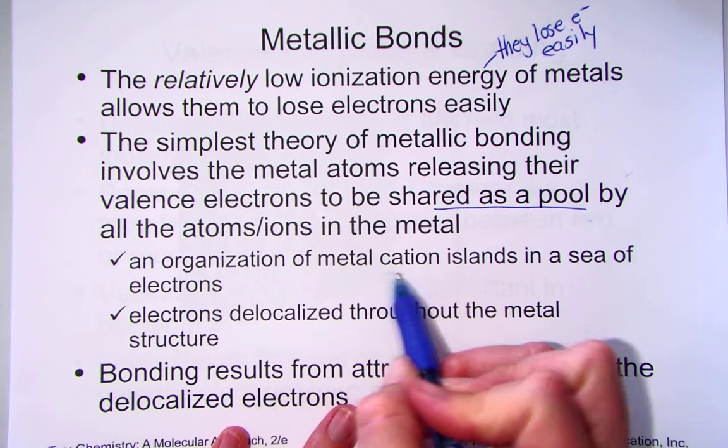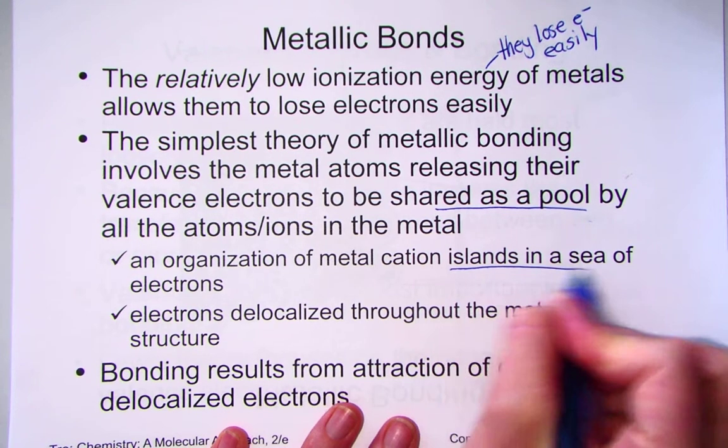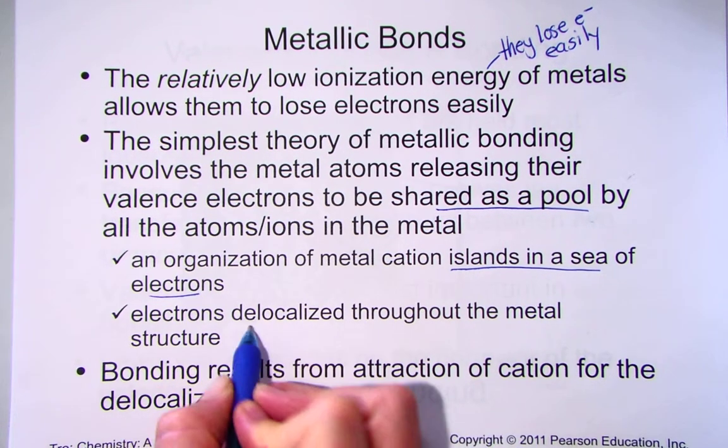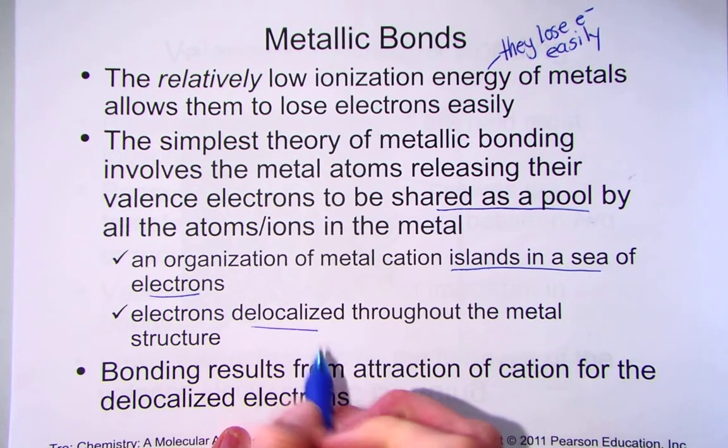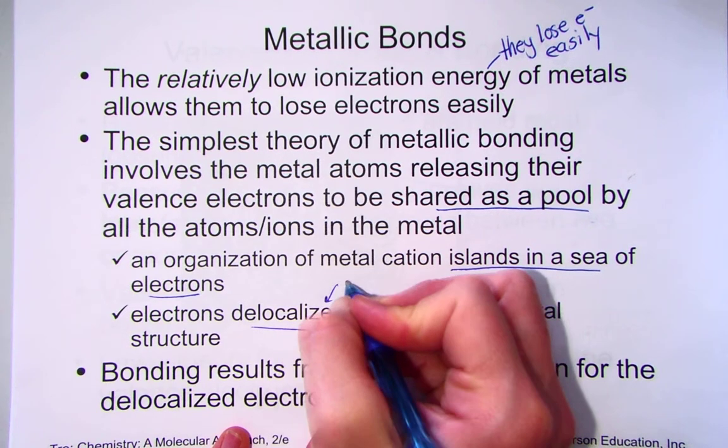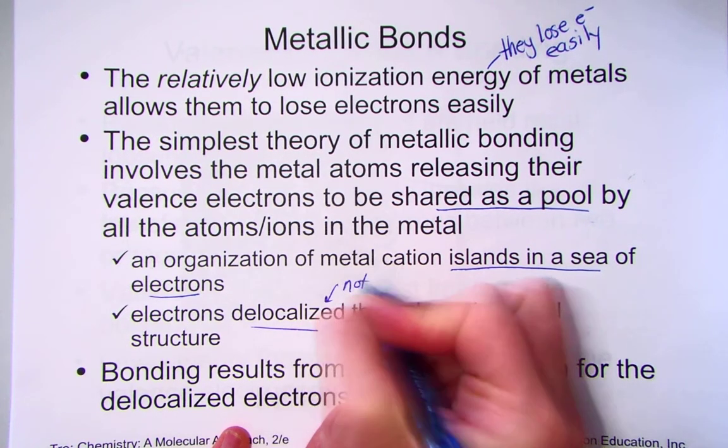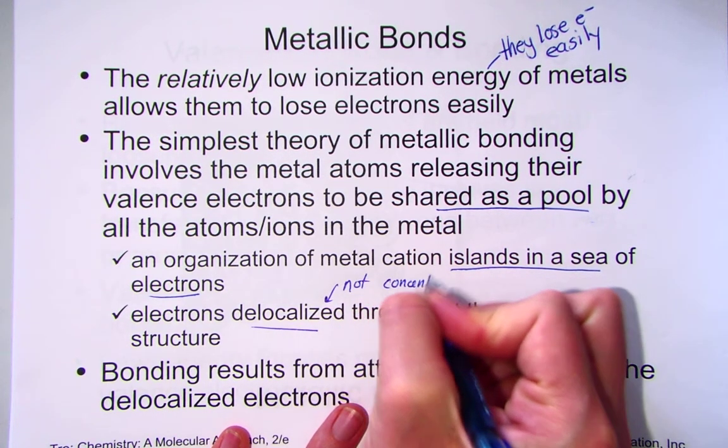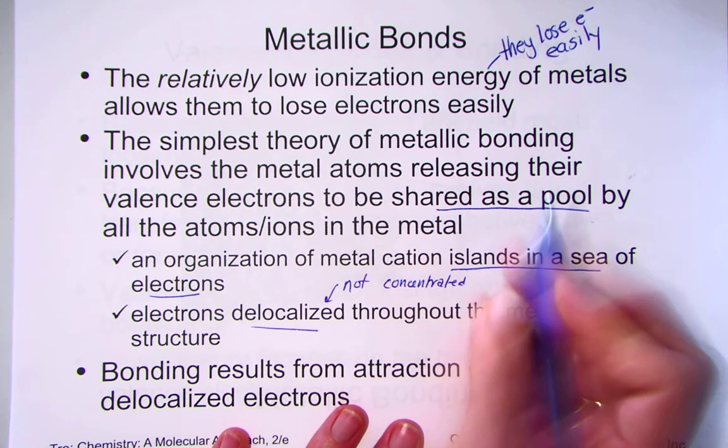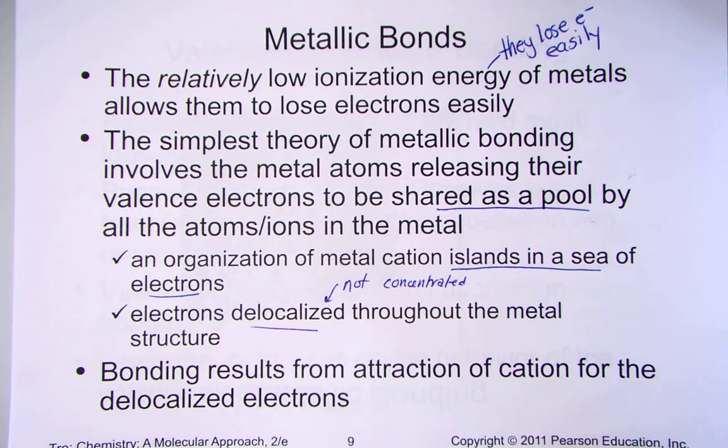The organization of metal cation islands in a sea of electrons, where they are delocalized. In other words, this just means the opposite of concentrated. They are not concentrated around any particular atom, but allowed to flow from atom to atom to atom.